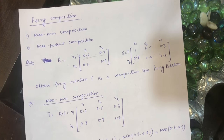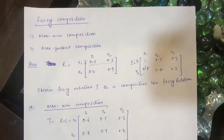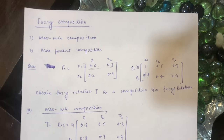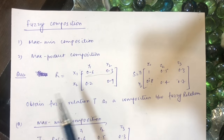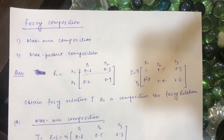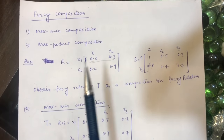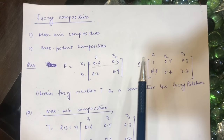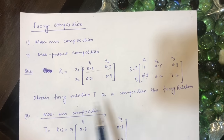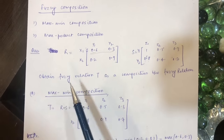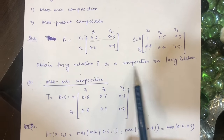In this video I will be talking about fuzzy composition. We have two ways of composition: max-min composition and max-product composition. In this question, we have been given two relations — R and S — and we are asked to find fuzzy relation T as a composition between these fuzzy relations.